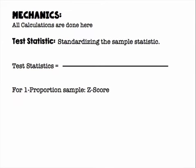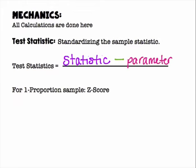The mechanics section is where all calculations are done. Your test statistic involves standardizing the sample statistic to get a Z score. The test statistic is your statistic minus your parameter divided by the standard error of the statistic. For a Z test it's Z; for a T test it's T, and so on.